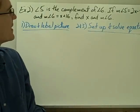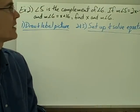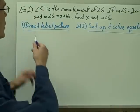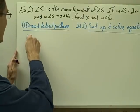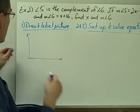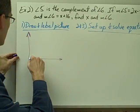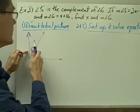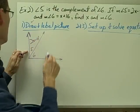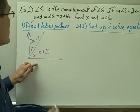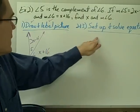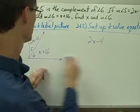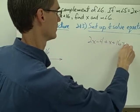Example number 2: angle 5 is the complement of angle 6. If the measure of angle 5 equals 2x minus 4 and the measure of angle 6 equals x plus 16, find x and the measure of angle 6. Step 1: draw and label the picture. Angle 5 being the complement of angle 6 means they are complementary, so I draw a pair of complementary angles labeled angle 5 and angle 6, with measures 2x minus 4 and x plus 16. Since they are complementary, the sum of their measures equals 90.